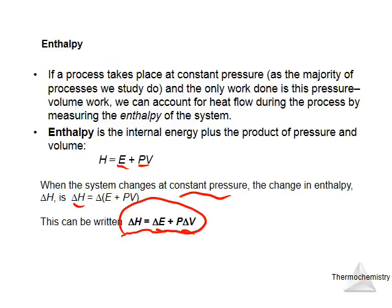Now if delta H is increased, that means enthalpy is increased, which means delta E, or internal energy, is also increased. And if that is the case, work could be done by the gas. So P delta V would represent work done by the gas to the surroundings.